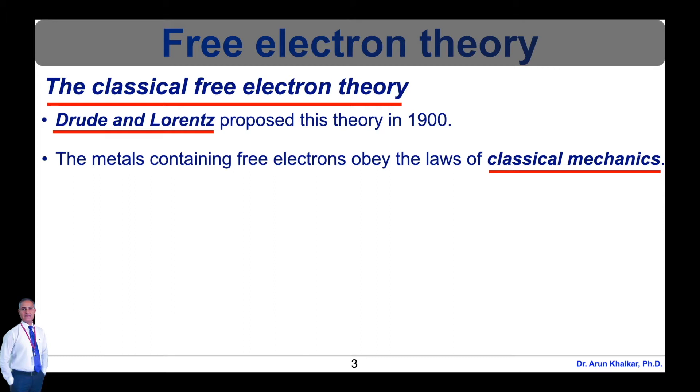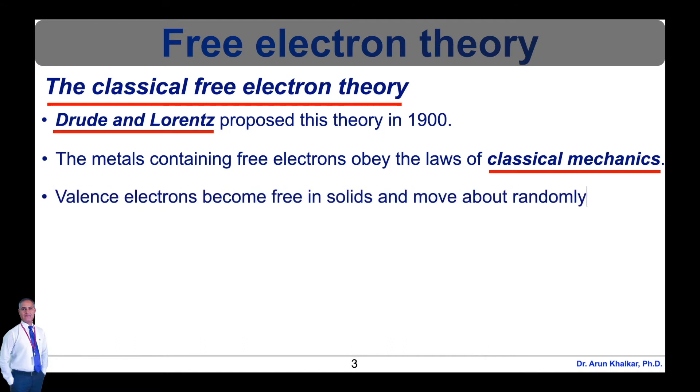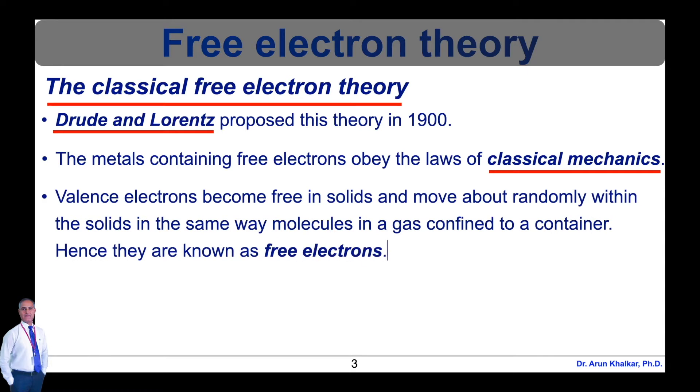Later quantum mechanics became the basis of the theory of most general properties of simple metals such as sodium with one free electron per atom, magnesium with two, and aluminum with three. Valence electrons become free in solids and move randomly within the solids in the same way molecules in a gas confined to a container. Hence they are known as free electrons.